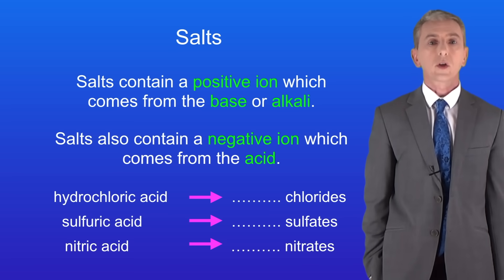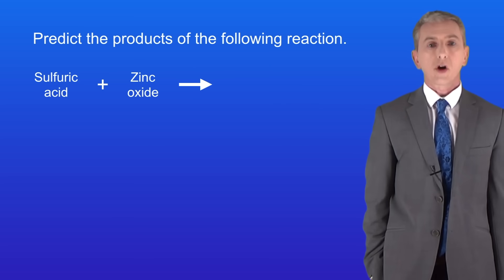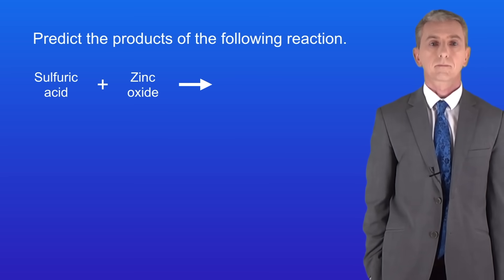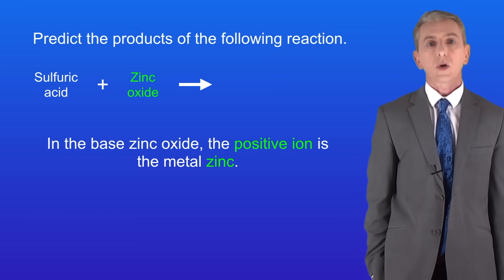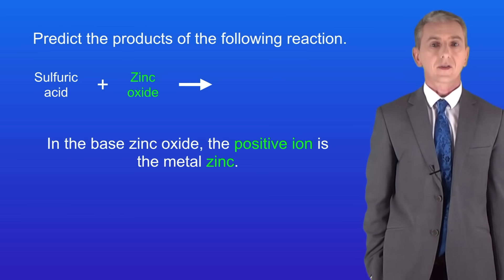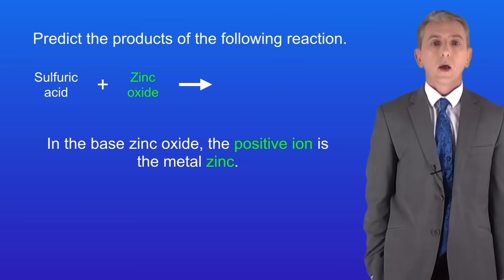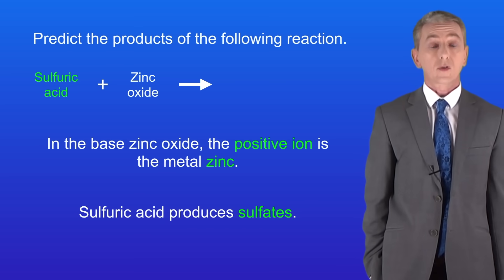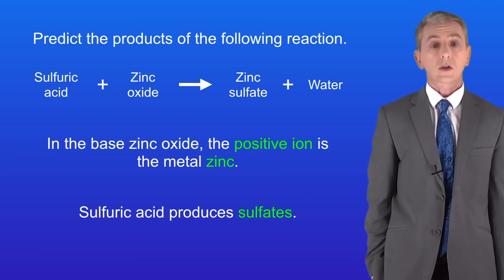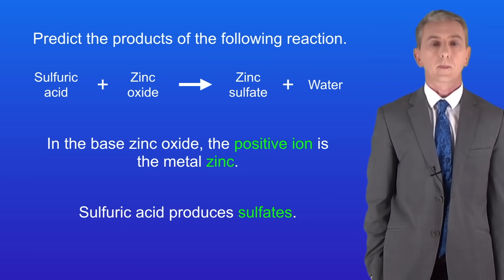Here's a question for you to try: predict the products of the following reaction — sulfuric acid plus zinc oxide. Pause the video and try this yourself. In the base zinc oxide the positive ion is the metal zinc. We know that sulfuric acid produces sulfates, so that means that our products are the salt zinc sulfate and water.